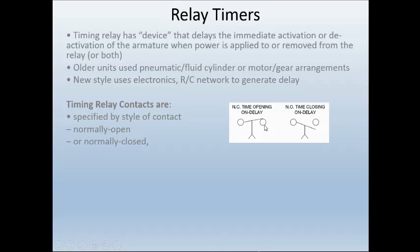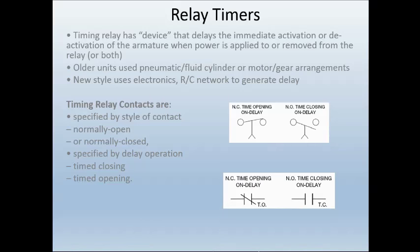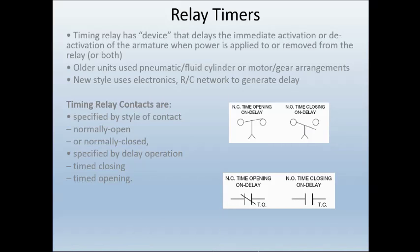Timing relay contacts are specified by the style of contact — you have your normally open and your normally closed. You can see in its normal position this contact is open, and this one here in its normal position the contact is closed. We also specify by the operation: timing closed or timing open. The direction of the arrow here will help us indicate which direction the timing function is going to happen.